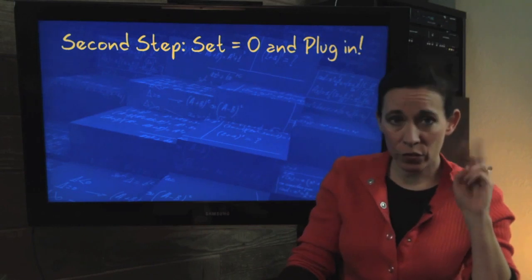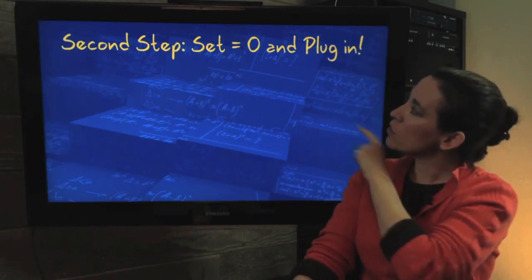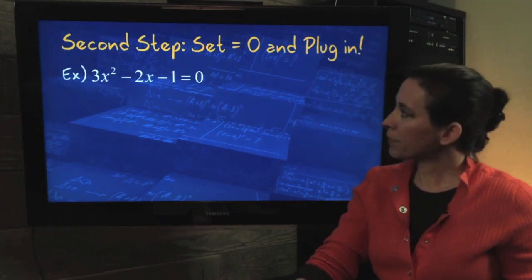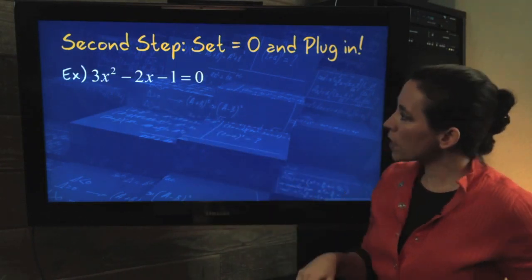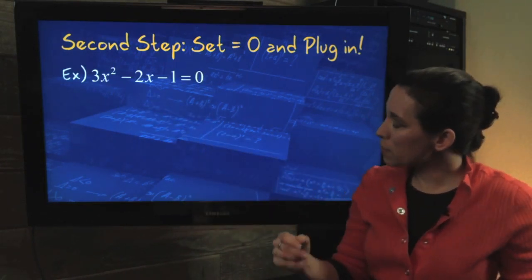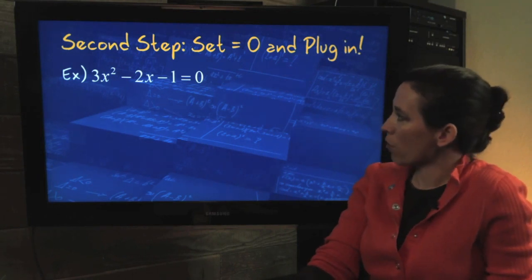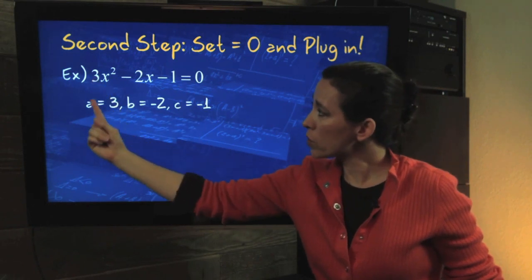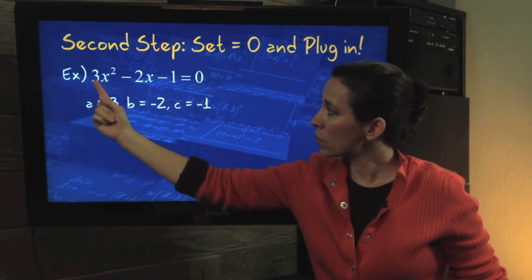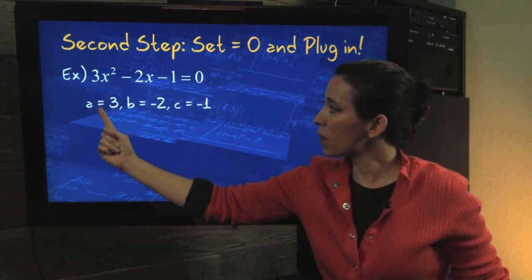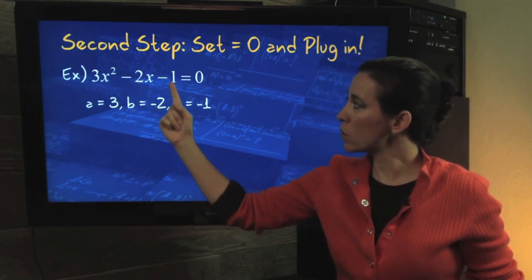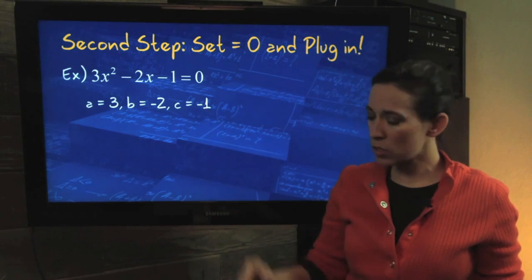So the second step, after you've learned the formula, is to set the equation equal to zero and plug in. So let's look at this example. 3x squared minus 2x minus 1 equals zero. It's in standard format, equal to zero. So our first coefficient here is going to be our a, which is 3. The second one's going to be our b, which is negative 2. And the last one is our c, which is negative 1.